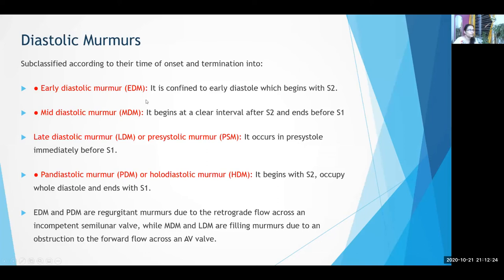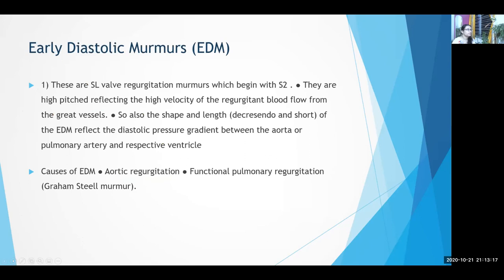Diastolic murmur classification: early diastolic murmur begins with S2 and is confined to early diastole. A mid-diastolic murmur begins at a clear interval after S2 and ends before S1. Late diastolic murmur occurs in pre-systole, immediately before S1. A pan-diastolic murmur begins with S2, occupies the whole of diastole, and ends with S1. Early diastolic and pan-diastolic murmurs are regurgitation murmurs due to retrograde flow across incompetent semilunar valves.